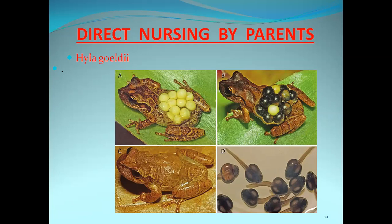The next example for direct nursing is Hyla goldii. In Hyla goldii, a special casing develops on the back during the breeding season. When not breeding, no special casing is seen. During the breeding season, eggs are accommodated in this special casing, and the parent carries the casing wherever it goes. Once the eggs are fully hatched, the hatched larvae leave the casing. Until then, the casing remains present on the parent's back.